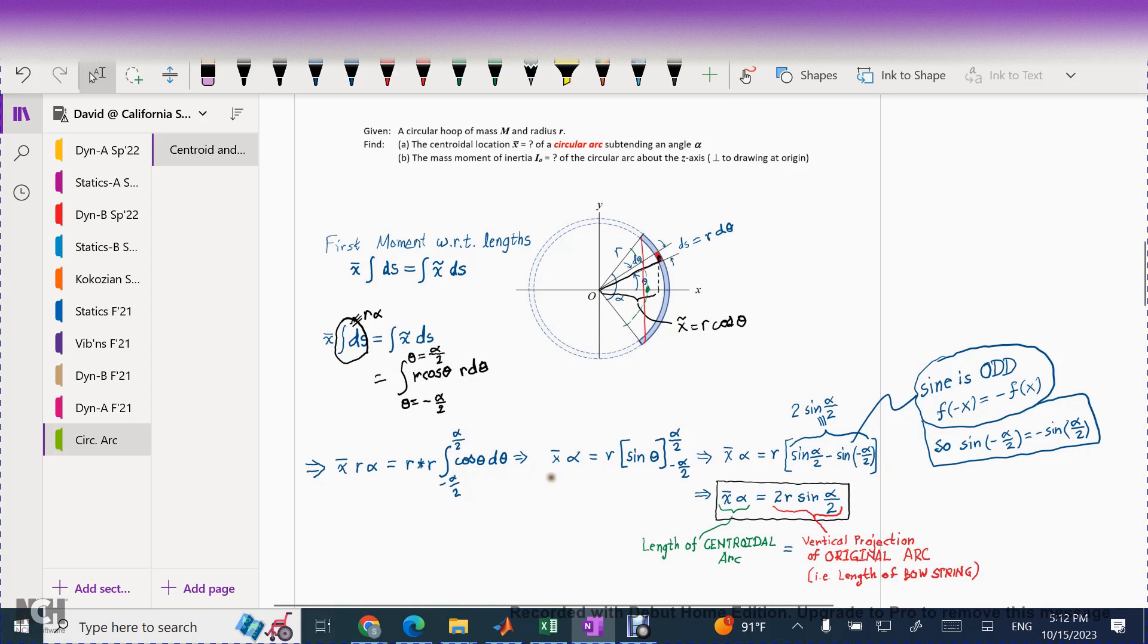And you're going to get x bar times alpha equals r. The integral of cosine of theta d theta is sine of theta. And the limits of integration as this patch starts way down here at an angle of theta equals minus alpha over 2. You're going to sum it up through the integral all the way until the patch winds up at the top part where theta takes on a value of alpha over 2 positive. And don't forget that the sine function is an odd function. That is to say f of the argument minus x equals minus times f of the positive argument x. So sine of minus alpha over 2 is the same thing as saying minus sine of positive alpha over 2. And so you're really going to get out of this when you stick in the limits of integration 2 times sine of alpha over 2. The formula that we're going to wind up getting is x bar times alpha equals 2r sine of alpha over 2, which has a very nice little interpretation.